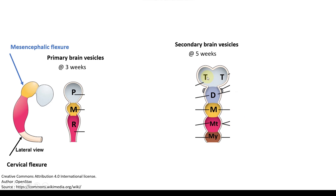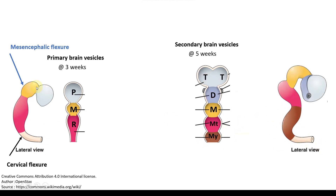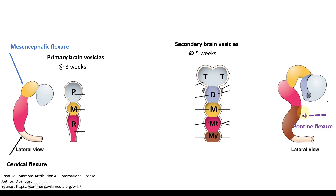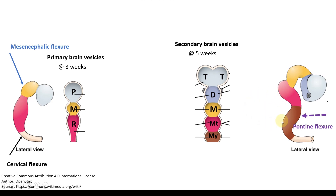Looking at a lateral view of the five-vesicle stage: we have the initial cervical flexure and the mesencephalic flexure, with the rhombencephalon between them. The rhombencephalon is now bending on itself, but this bend is dorsally directed — the concavity is dorsally directed. This flexure is called the pontine flexure. You have the metencephalon and the myelencephalon here, and from the metencephalon backwards you have the rhombic lip from where the cerebellum develops, hanging posteriorly.